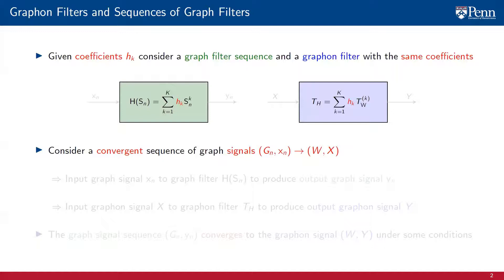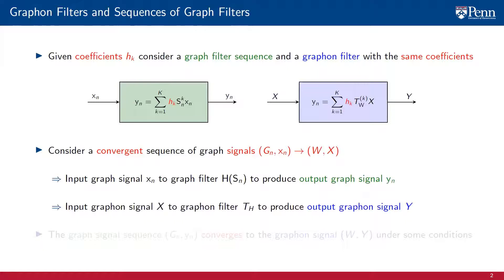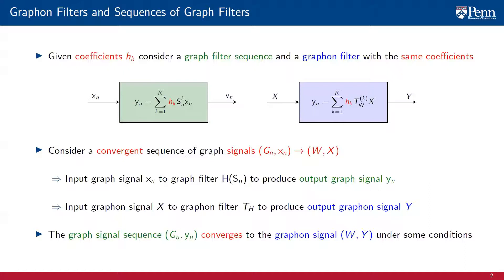To study this question, we consider a convergent sequence of graph signals Gn, Xn that converge towards the graphon signal W, X. The graph signal Xn is then fed as input to the graph filter H of Sn to produce the output graph signal Yn. We do this for all the signal-graph pairs in the sequence. Likewise, we feed the graphon signal X to the graphon filter Th to produce the output graphon signal Y. Our objective is to describe convergence results for the graph signal sequence Gn, Yn. This sequence can be shown to converge to the graphon signal W, Y under some conditions. Thus, taking the limit of the graph signal sequence and applying a filter is the same as applying a filter and taking the limit. We can understand graph filters in the limit by studying the corresponding graphon filter.